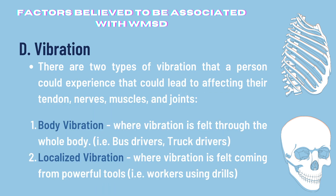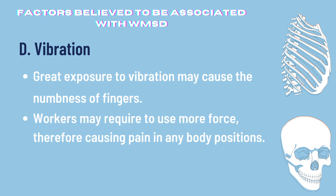The next factor associated with WMSD is vibration. There are two types of vibration: number one is body vibration, where vibration is felt through the whole body — for example, bus drivers and truck drivers. Next is localized vibration, where vibration is felt coming from powerful tools, for example, workers using drills. Great exposure to vibration may cause numbness of fingers and loss of grip feeling in hands and arms. Since vibration tools are more difficult to control, workers may require to use more force, therefore causing pain in any body positions.